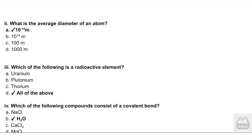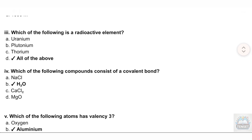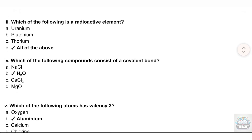Question 3: Which of the following is a radioactive element? A. Uranium, B. Plutonium, C. Thorium, D. All of the above.